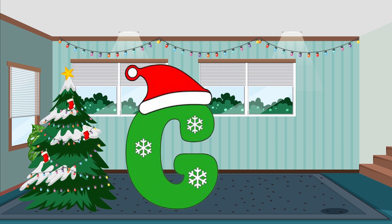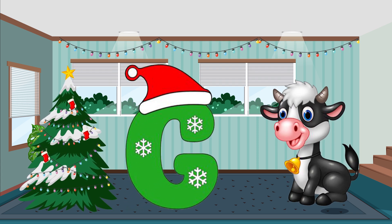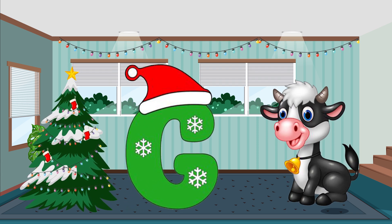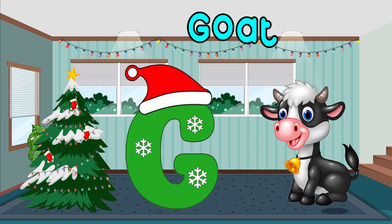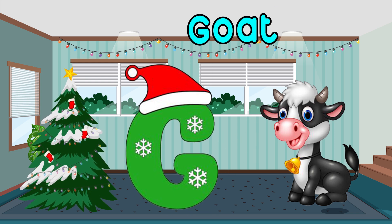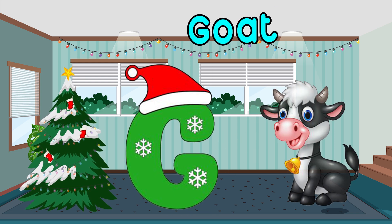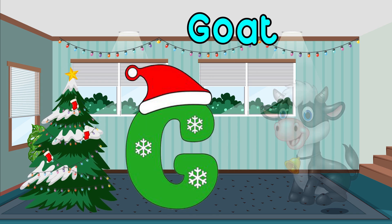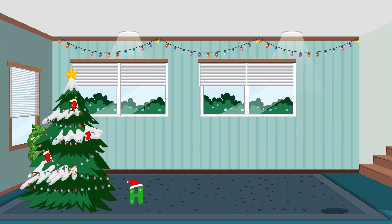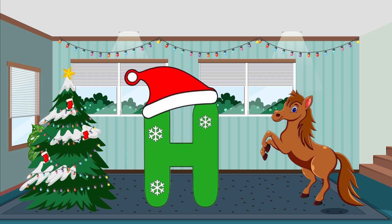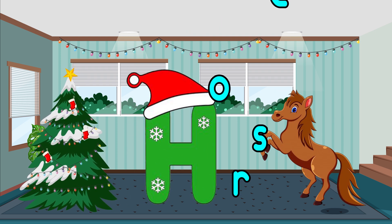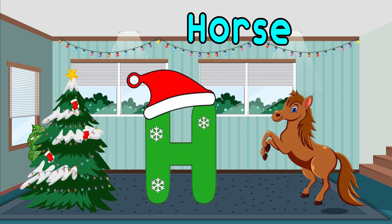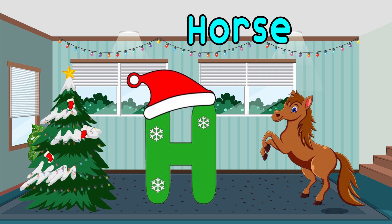G is for goat. G-g-g-goat, g-g-goat. G, goat. H is for horse. H-h-h-h, horse. H-h-h-h, horse.